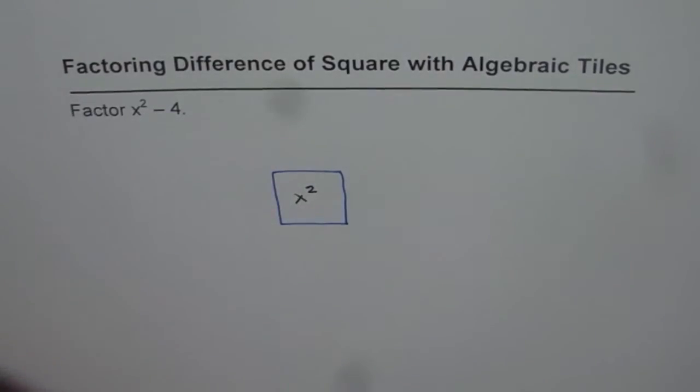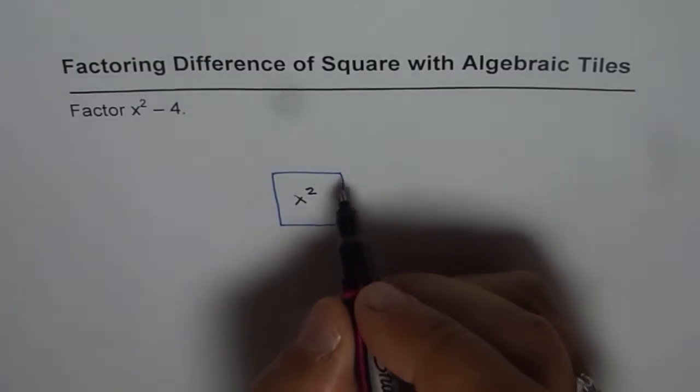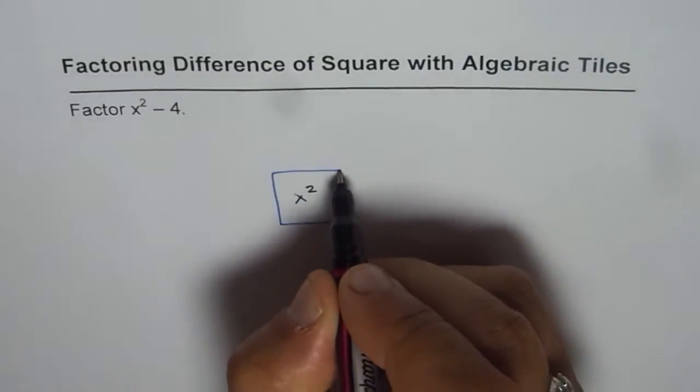Now in this particular case, we have minus 4. So we have 4 unit tiles to be placed diagonal to the x squared tile.